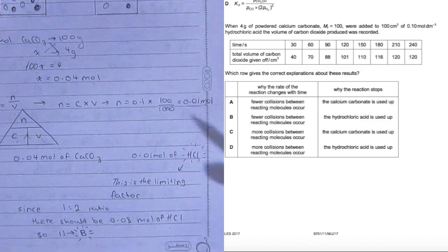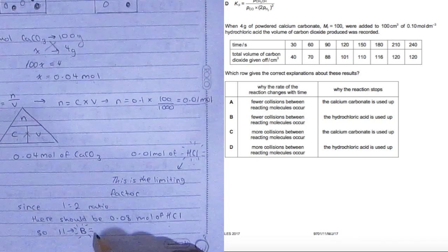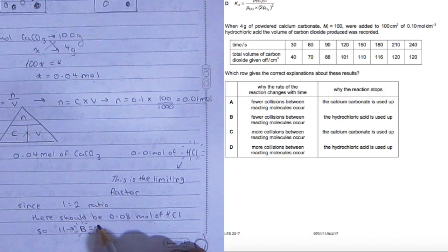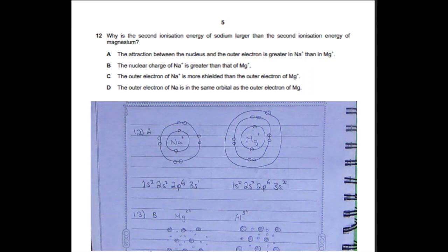We're supposed to have 0.08 moles of HCl, except we only have 0.01. So you know that HCl is the limiting factor and calcium carbonate is in excess, so the answer will have to be B.